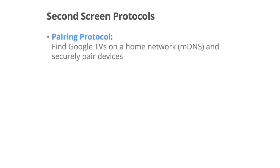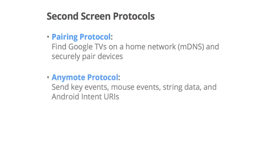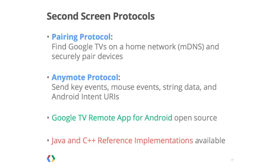Google TV also includes two second screen services accessible on a user's home network. The first is for pairing personal devices with Google TV so they can securely send information to the TV. The second is the AnyMote protocol, which allows devices to send key events, mouse events such as movement and clicking, basic string data, and URIs for starting intents. Whichever app is in the foreground will receive the key and mouse events, so you can use AnyMote to build companion apps for phones or tablets. Java and C++ libraries implementing these protocols are available online as open source, so developers don't need to start from scratch. The Google TV remote app for Android mentioned earlier uses these protocols and is also available open source.